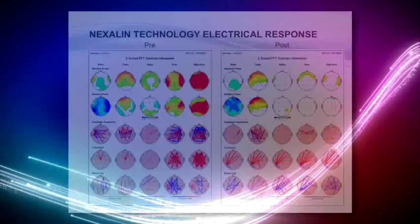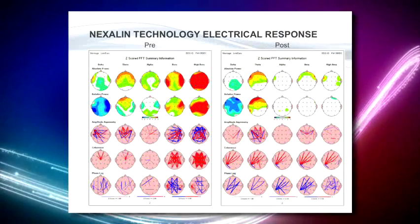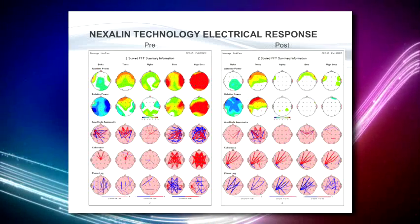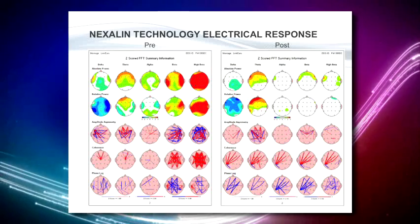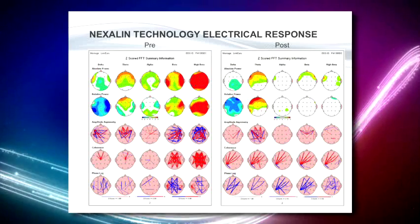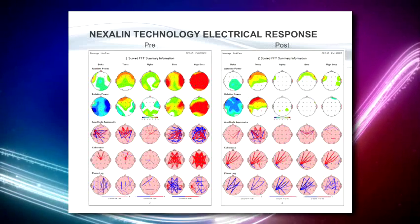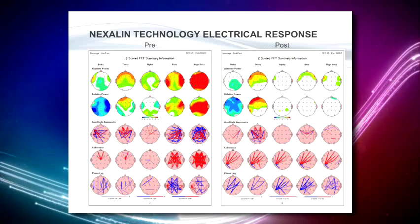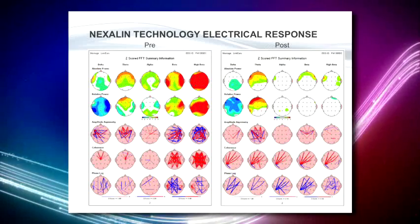This is a typical footprint of a brain suffering from anxiety. You'll notice that on the right side of the pre map, there's a tremendous amount of red. That's simply demonstrating that that part of the brain is overactive — in other words, it is anxious. It's a busy brain.